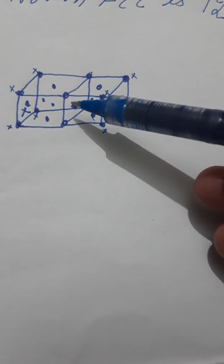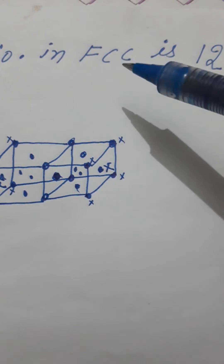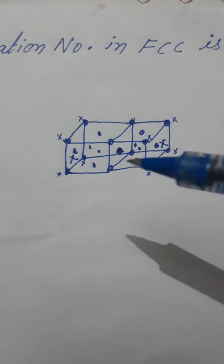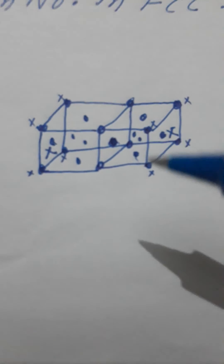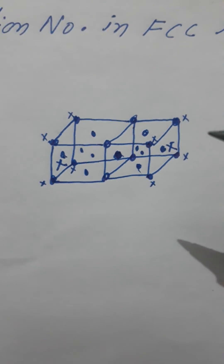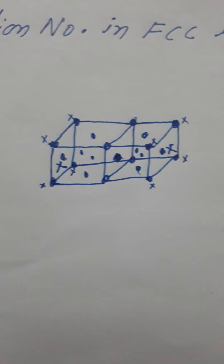After excluding those particles, the remaining particles are all in contact with this particle. So the coordination number for the face-centered unit cell (FCC) is 12. You can easily understand this by the help of this diagram and this video. Thank you, students.